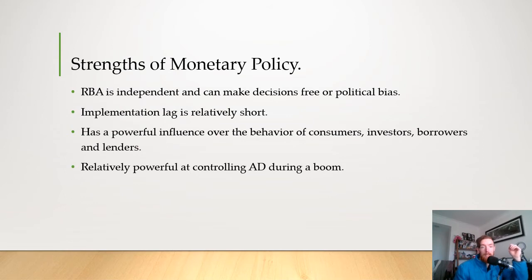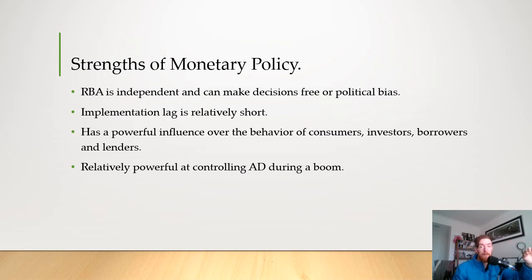Getting into strengths of monetary policy: the first strength is that the RBA is independent — they can make decisions free of political bias. They don't have to worry about the government; although the government does try to influence them, they are free to make decisions about monetary policy on their own. Also, the implementation lag is relatively short. Most often they announce on a Tuesday that the cash rate will be dropped, it is dropped then, and by the next day the banks have decided whether to pass on the interest rate cut. So within 24 hours, interest rate cuts have been passed on to consumers.